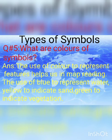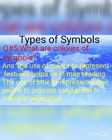The last question: what are the colors of symbols? یعنی کہ symbols کے colors کیا ہوتے ہیں؟ The use of color to represent features helps us in map reading — یعنی کہ map کو read کرنے میں آسانی پیدا کرتے ہیں۔ The use of blue to represent water, yellow to indicate sand, and green to indicate vegetation.